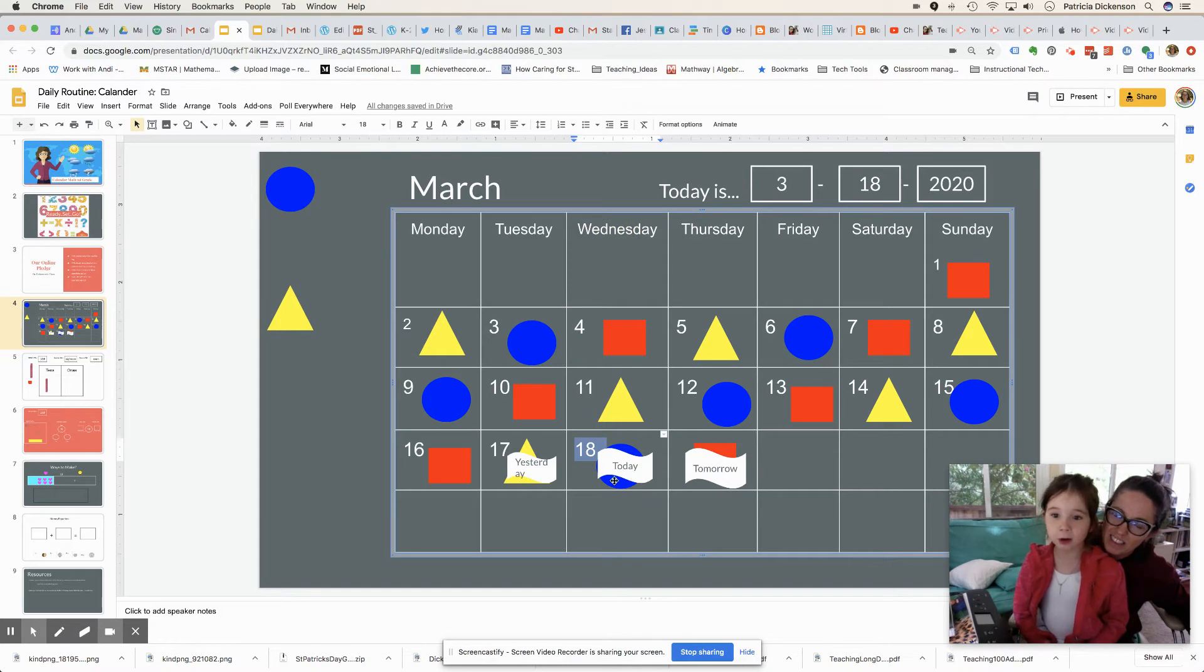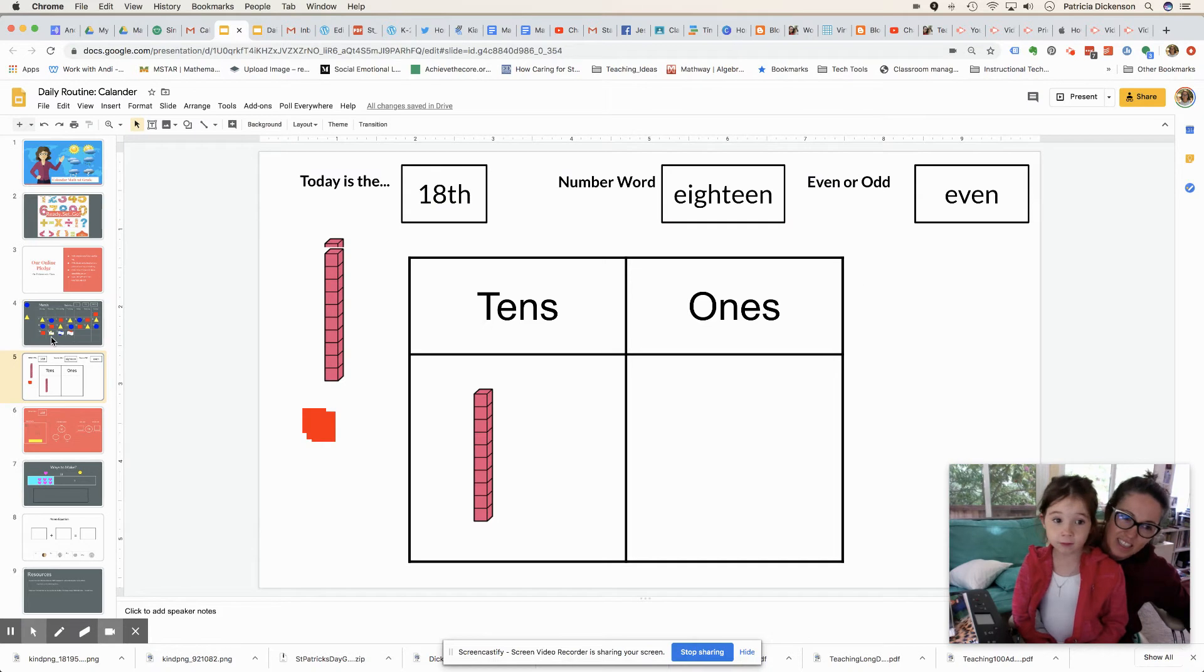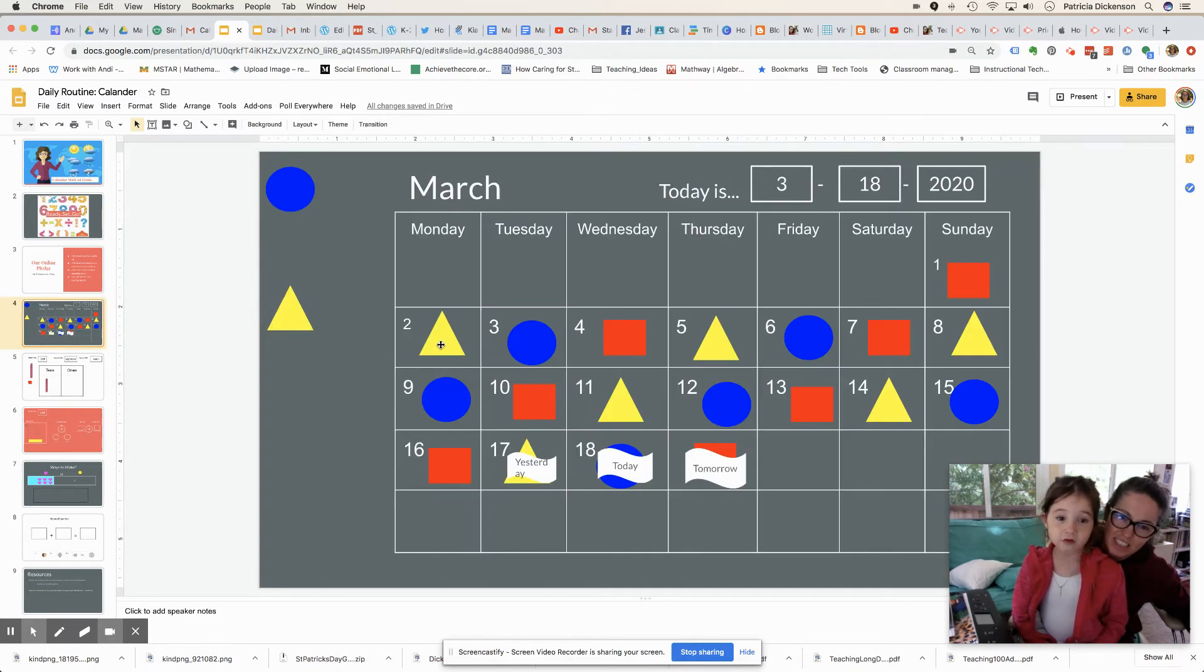Now I'll show you what the pattern is. It's red rectangle, yellow triangle, blue circle.